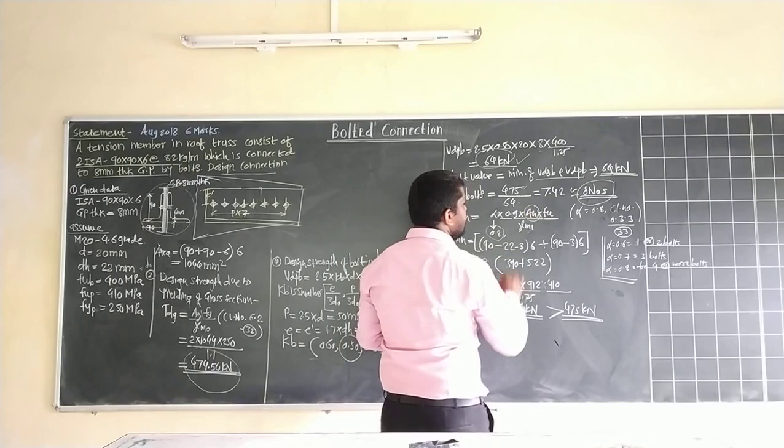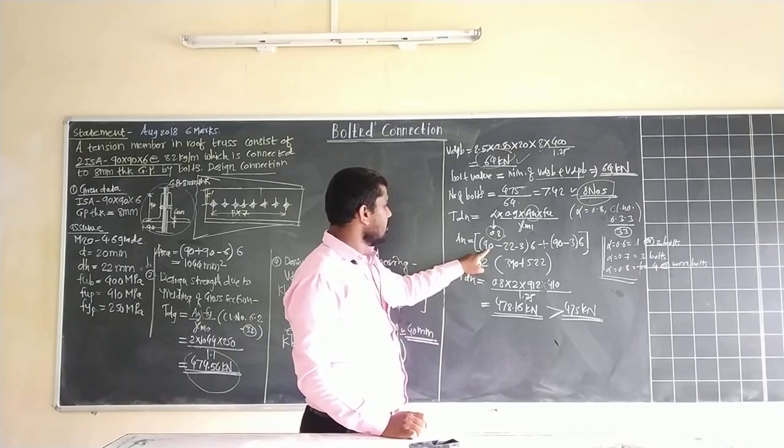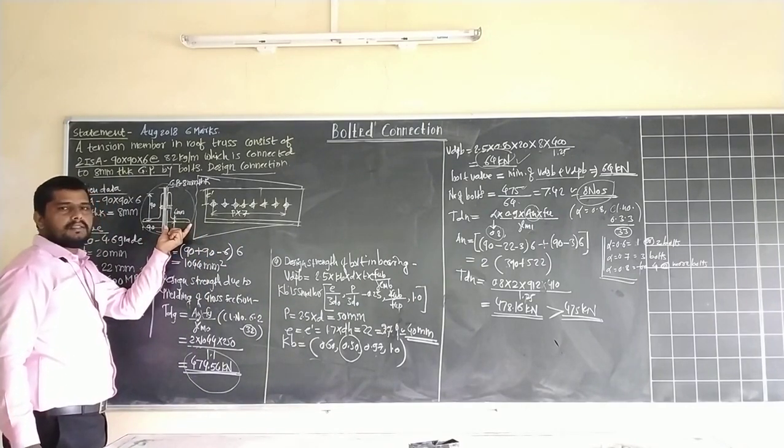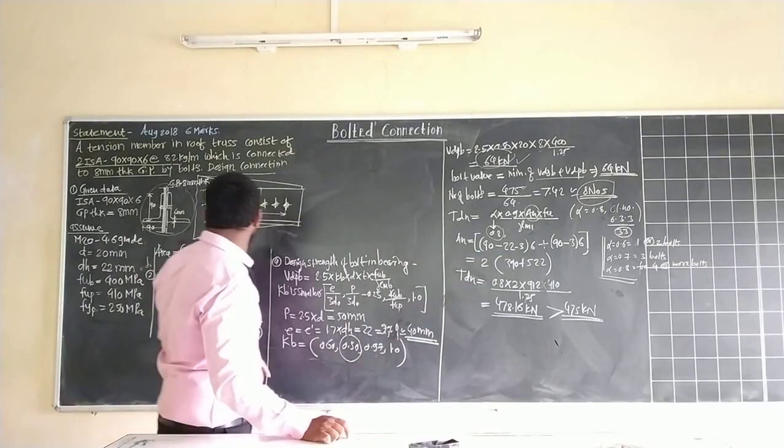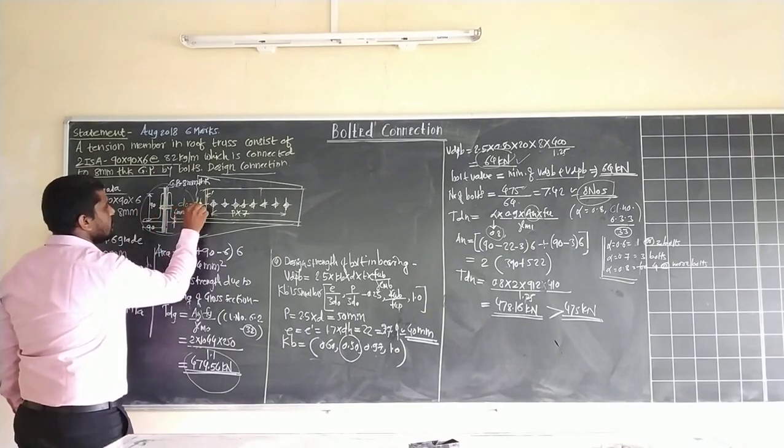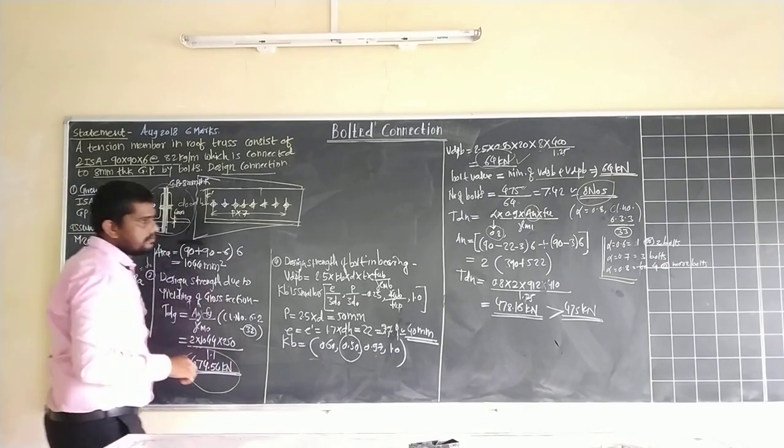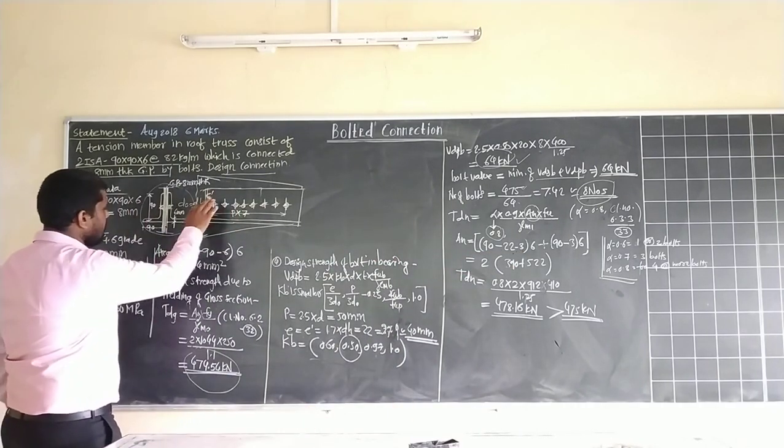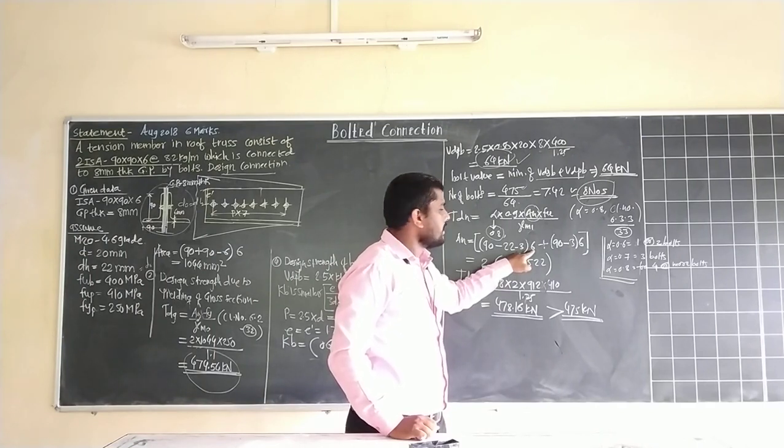Next: determine A_N, net area. How to find net area? We know 90 mm is leg A and leg B is 90 mm. So (90 minus 22 minus 3) into 6, thickness of the plate, plus...